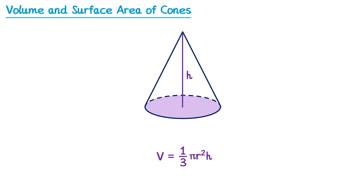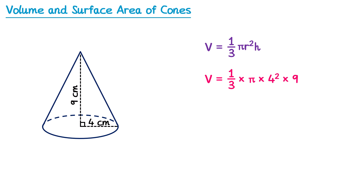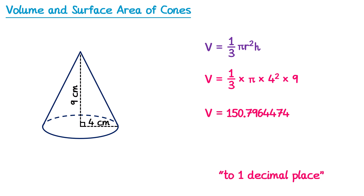Good news — this formula will be given to you in the exam. Let's use it to find the volume of this cone. We do: volume = 1/3 × π × r squared. The radius is 4, so 4 squared, multiplied by h, the perpendicular height, which is 9. Typing this into the calculator and rounding to 1 decimal place gives 150.8 centimetres cubed.